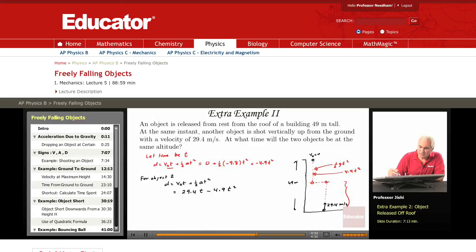Object number 1 falls a distance of 4.9 T squared. Object number 2 rises a distance of 29.4 T minus 4.9 T squared. They will meet when the sum of the two distances is equal to 49. So, if I add up both distances, they must add up to 49 meters. That's when the two objects meet.